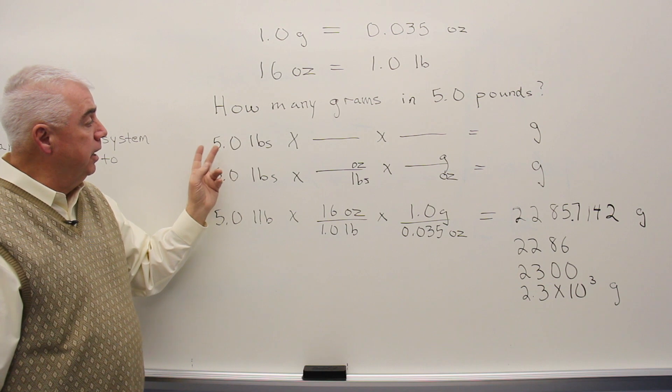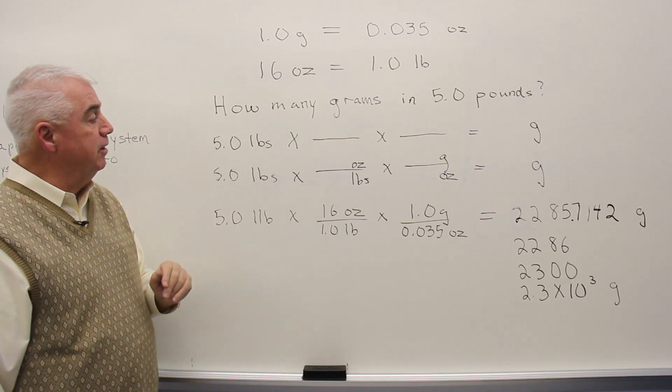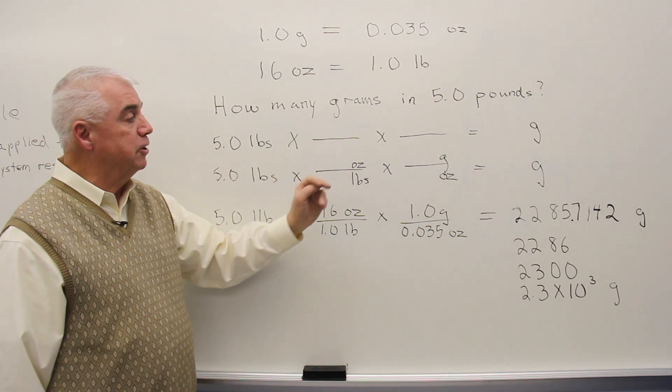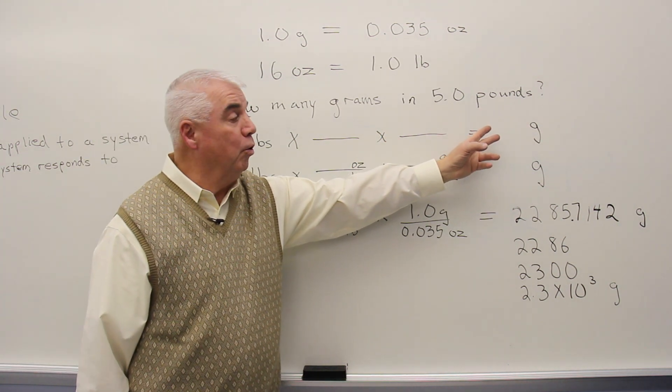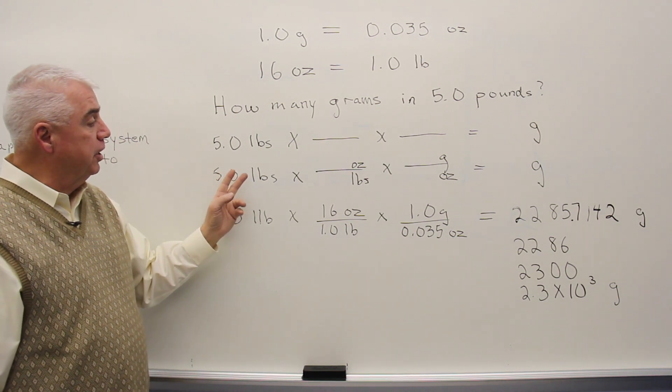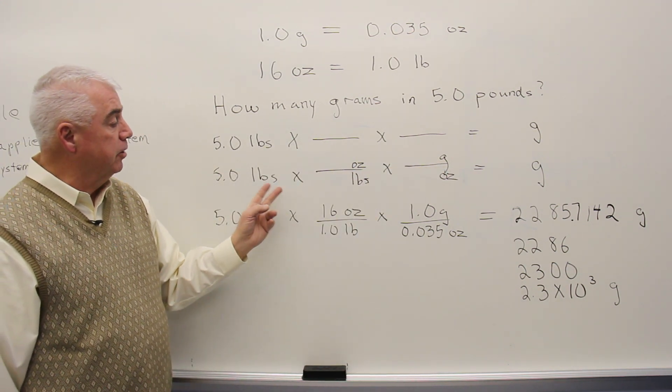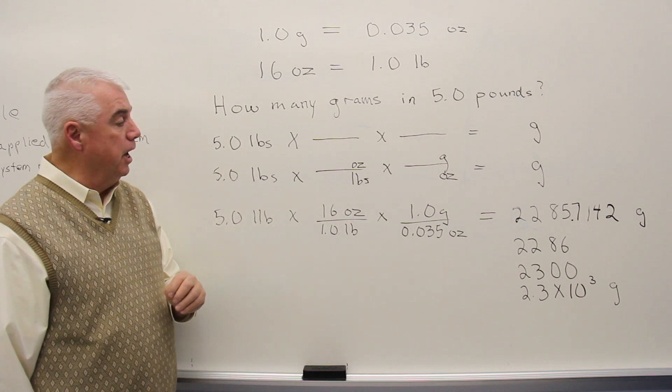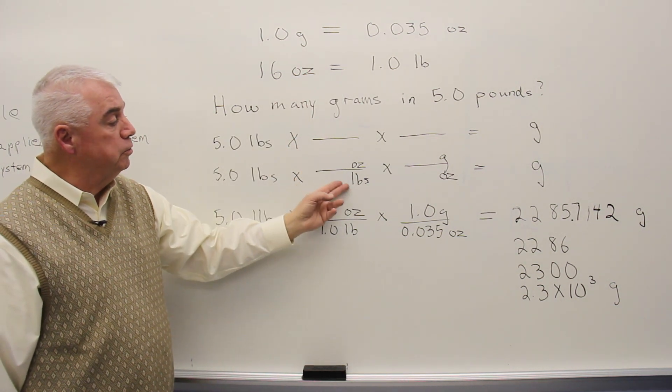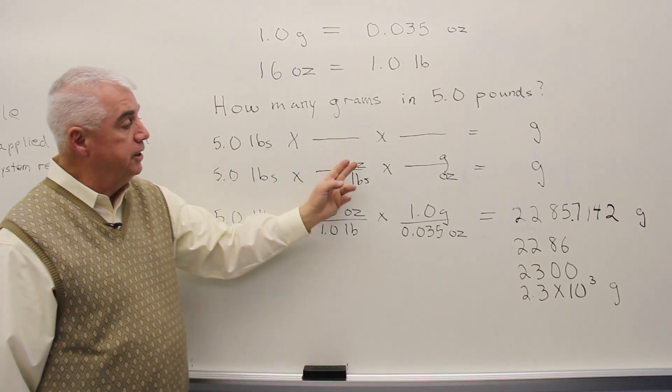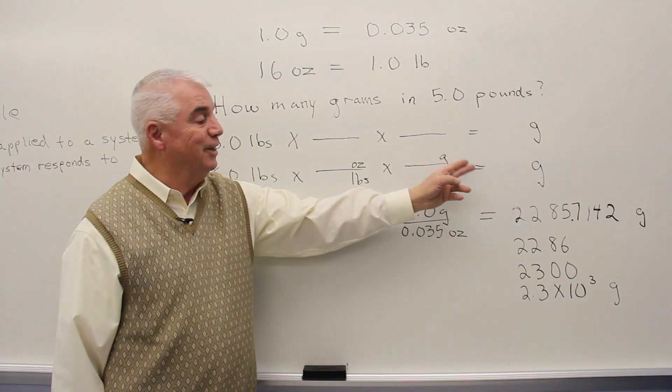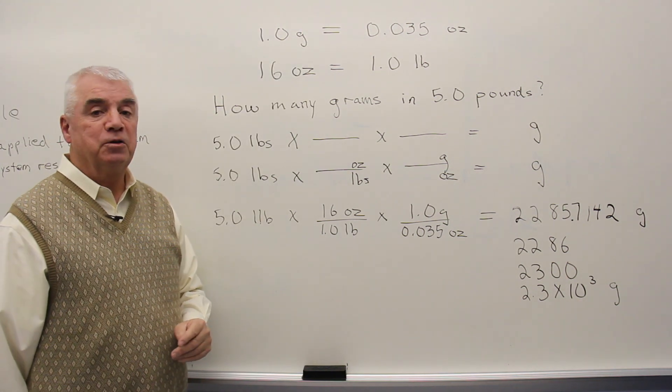So as we begin, again, we'd start with the first step in the factor unit method, the number that's given, 5.0 pounds. I'll leave space for a factor, another factor. And here's what we'd like to know, grams. Then we can see that our objective is to convert pounds to grams in these two factors. So I need pounds down here in the denominator. Going back up to these two equations, here's pounds, and we know the relationship to ounces. So ounces will go in the numerator. We'd like to get rid of ounces. So ounces is in the denominator of the next factor. And we'd like to have grams. So it's in the numerator. And the first expression tells us that relationship.